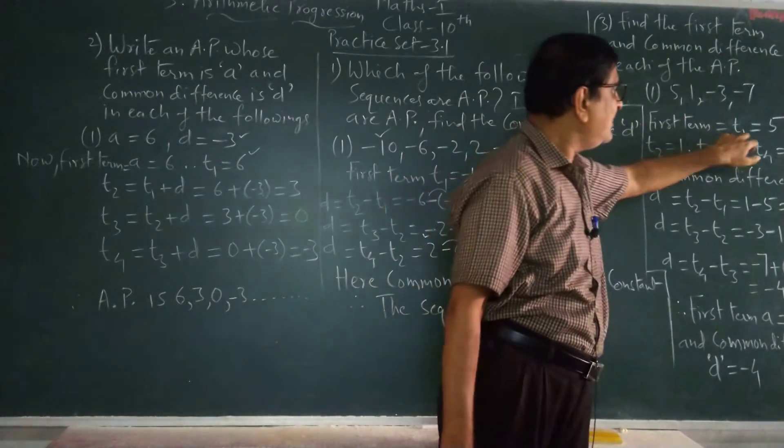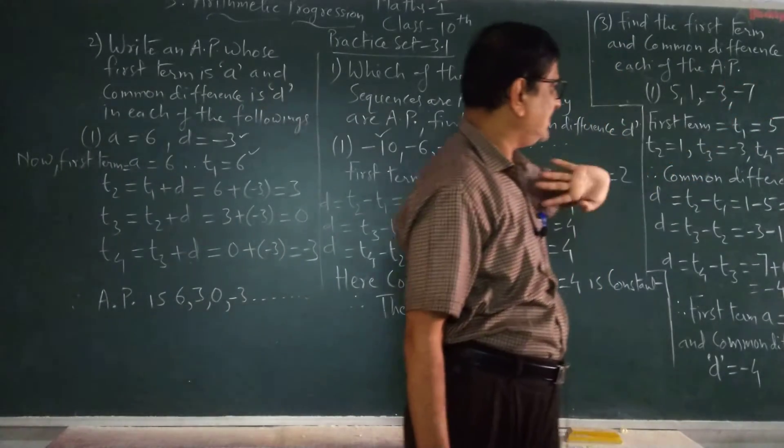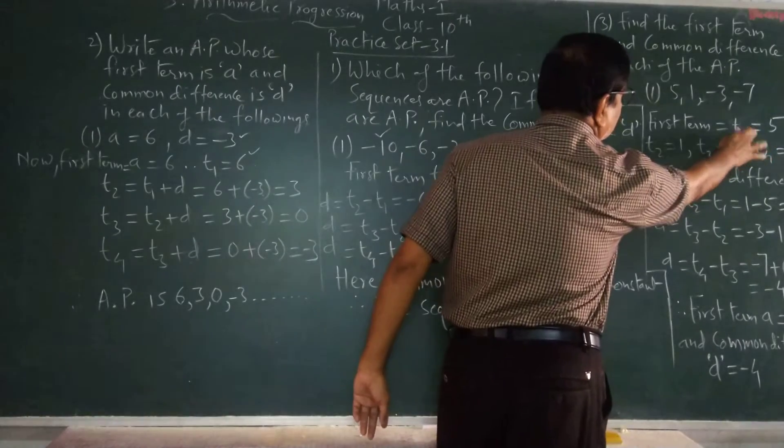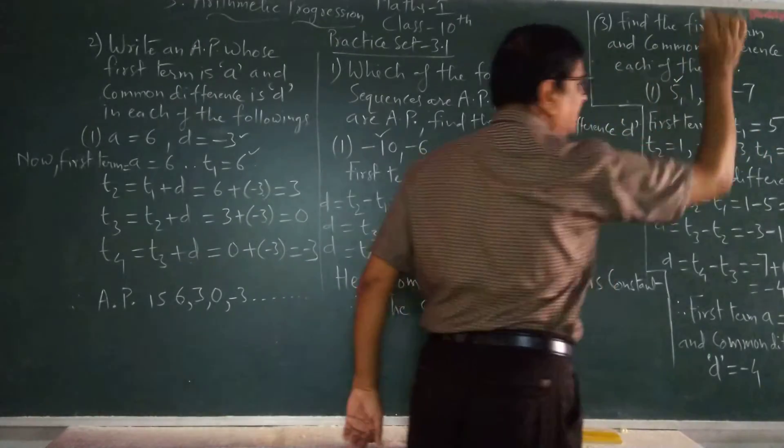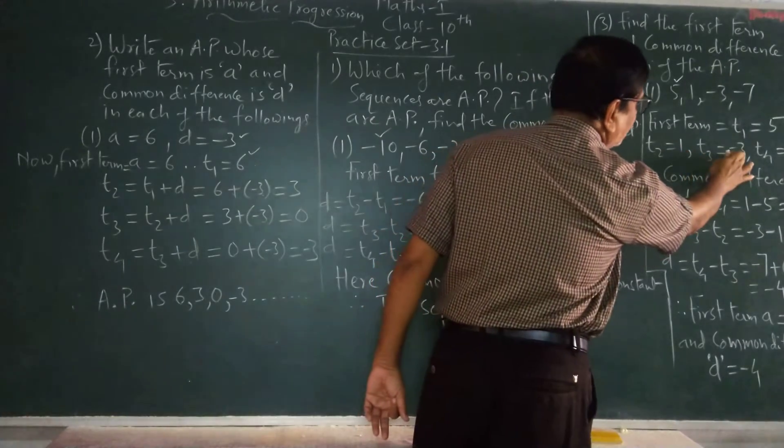So first term is 5, 1, minus 3, minus 7. T1 is equal to 5, first term is T1. T2 is equal to 1, T3 is equal to minus 3, T4 minus 7.